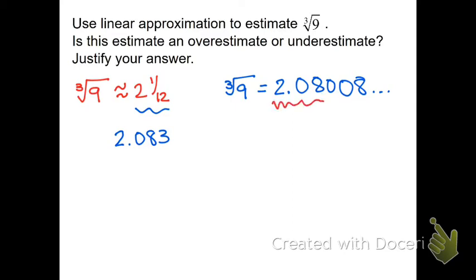So compare these two answers. This is the actual value. All the way up to the 0 is where it changes. And this is my estimated value. We're pretty dang close. But is my estimate above or below my actual answer? And you can see the estimate is above it. This is an overestimate.